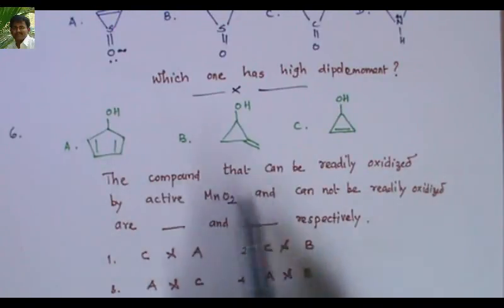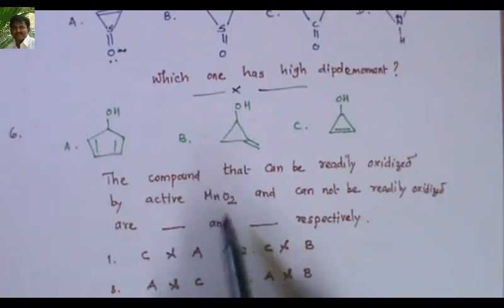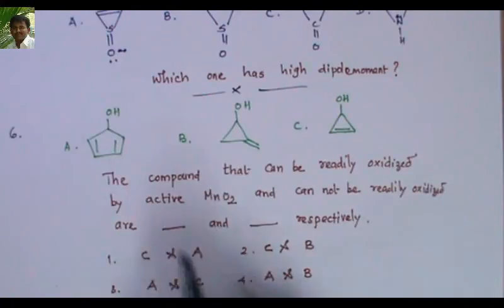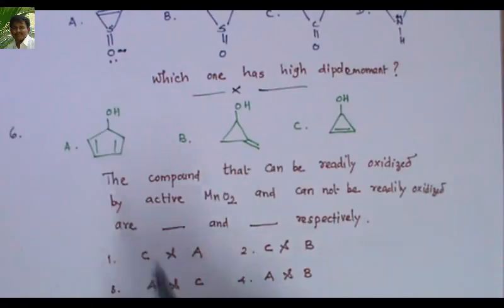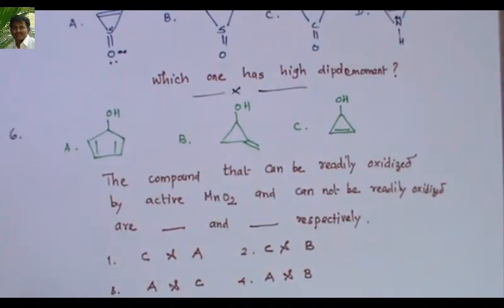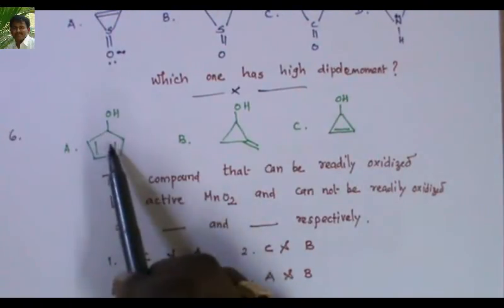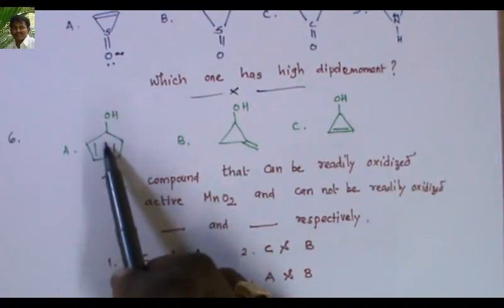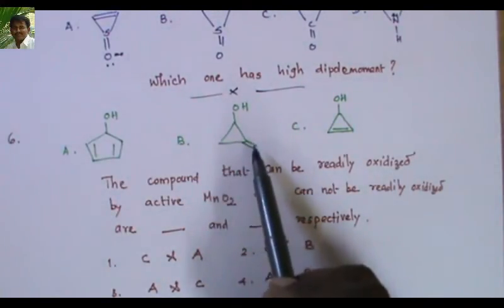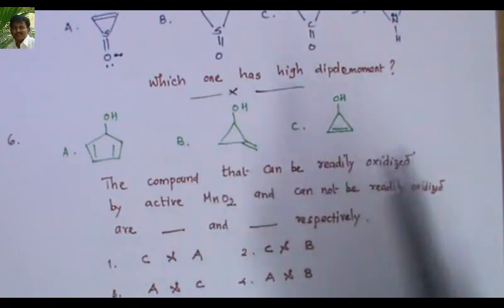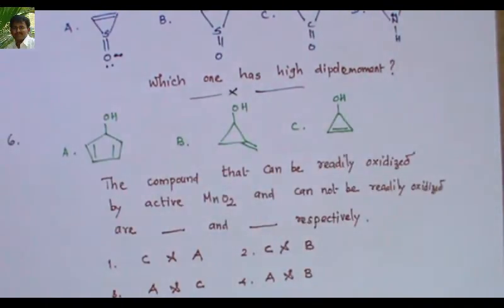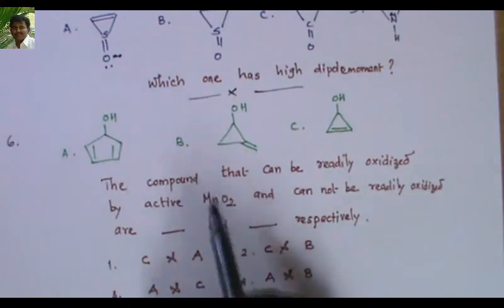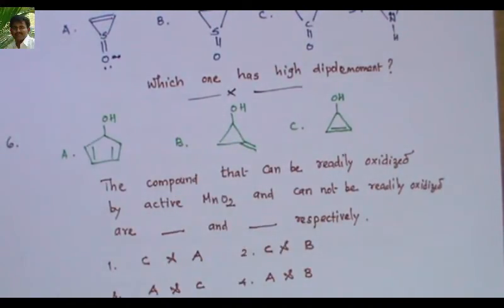Next: three compounds are given. Identify which compound can be readily oxidized by active manganese oxide (MnO2) and which cannot be readily oxidized. If one compound is oxidized and gives an anti-aromatic product, another gives non-aromatic, and another gives an aromatic product — use that reasoning. You may know that allylic alcohols can be oxidized by MnO2.